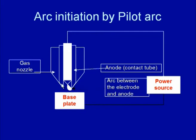Once this arc is established, normal current is supplied to develop the welding arc between the base material and the electrode. A typical auxiliary power source is used to supply this low current for arc initiation. The advantage is that the low current arc reduces thermal damage to the tungsten electrode, which in turn helps increase the life of the electrode.